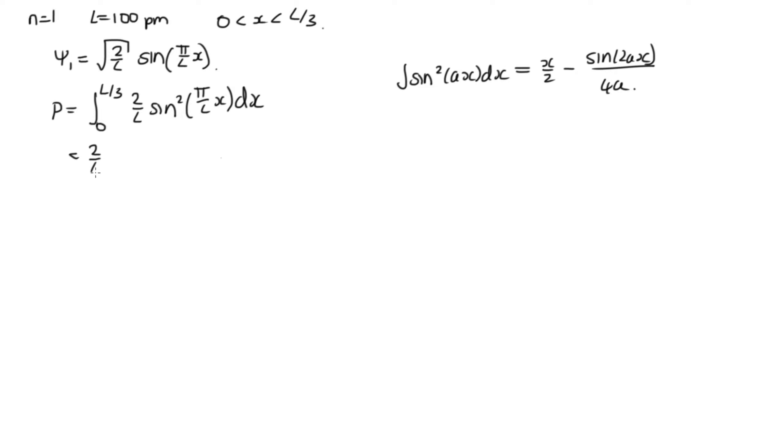So using this, we can pull the 2 over L out the front as a common factor. And then we're just doing our integral. So we've got x on 2, and a in this case is pi over L. So then this is minus sine times 2 pi over L times x over 4 times pi over L. And we're evaluating at x equals 0 and L over 3.